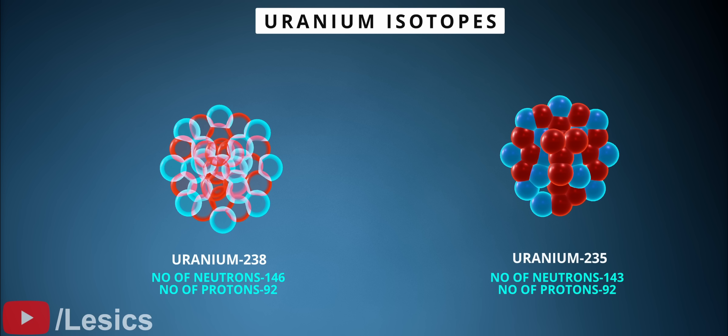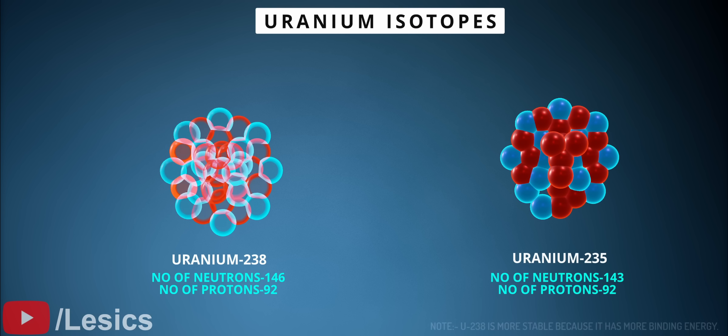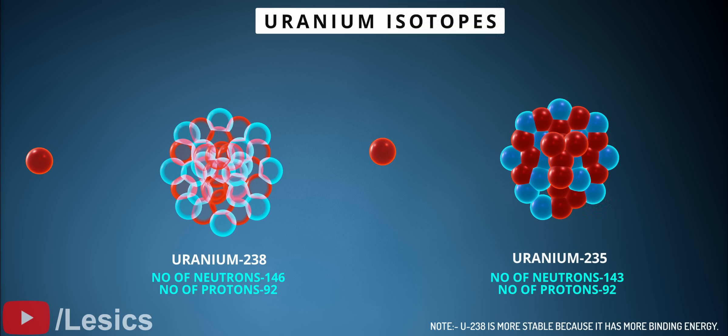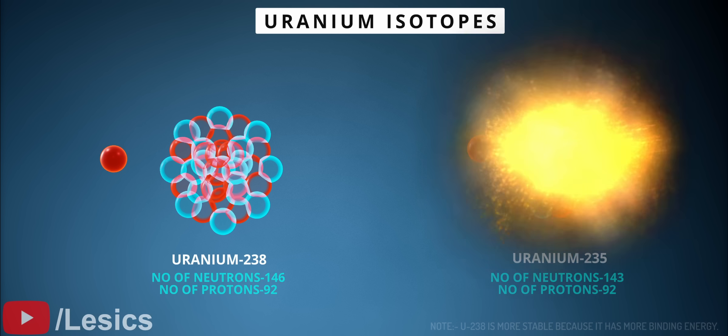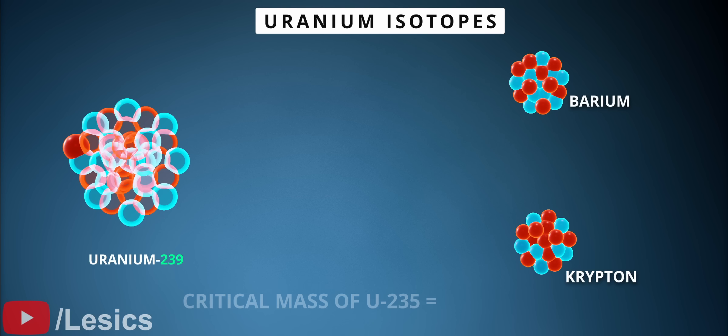Isotopes are the same chemical elements, but they have different numbers of neutrons. In uranium-235, there are less neutrons which are unable to bind all protons, making it unstable. Therefore, uranium-235 undergoes a chain reaction. Due to this, the critical mass of uranium-235 is also very low – at 47 kilograms.